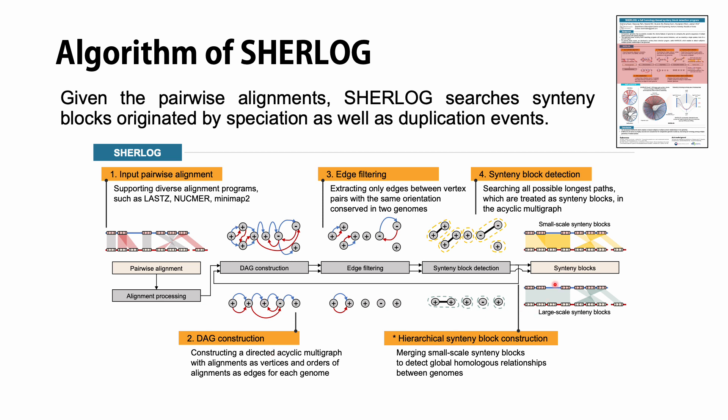Duplicated regions usually make detected syntenic blocks become shorter, which makes it hard to identify global homologous relationships among genomes. So we designed Sherlock to construct syntenic blocks in two different scales, and the steps between graph construction and syntenic block detection are conducted twice.